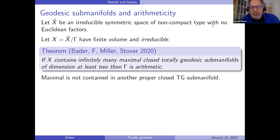Let me define the terms in the theorem. The first is 'maximal,' which means not contained in another proper closed totally geodesic submanifold. So if I'm in dimension three, every totally geodesic surface is maximal. If I'm in dimension five, a totally geodesic surface might be contained in a totally geodesic four-manifold.